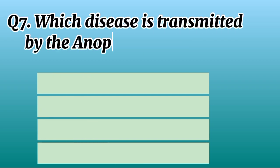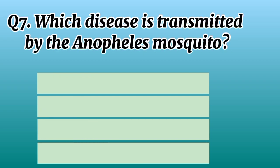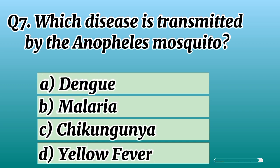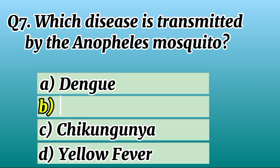Question 7. Which disease is transmitted by the Anopheles mosquito? Correct option B: Malaria.